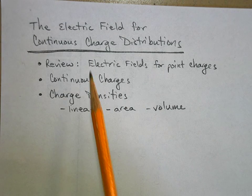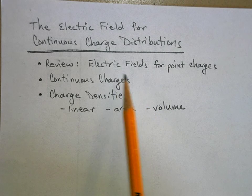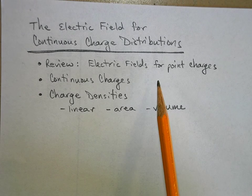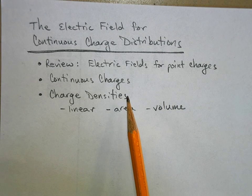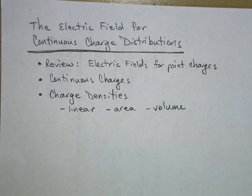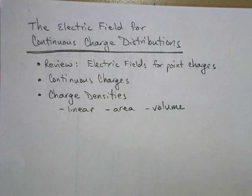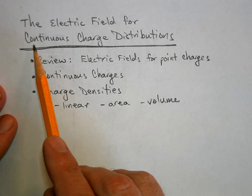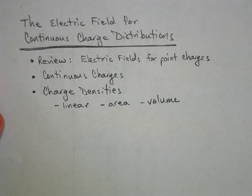We're going to figure out the electric field for continuous charge distributions. First thing we should do is review what the electric field is for point charges. We'll talk about that, and then we're going to take a continuous charge distribution — like if you take charge and smear it over a continuous area, volume, or line. Whenever you see this continuous distribution, that's a clue you're going to have to use calculus.